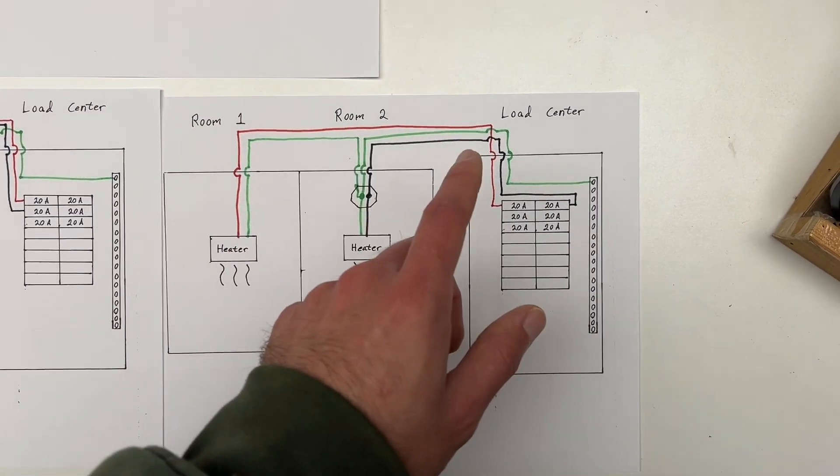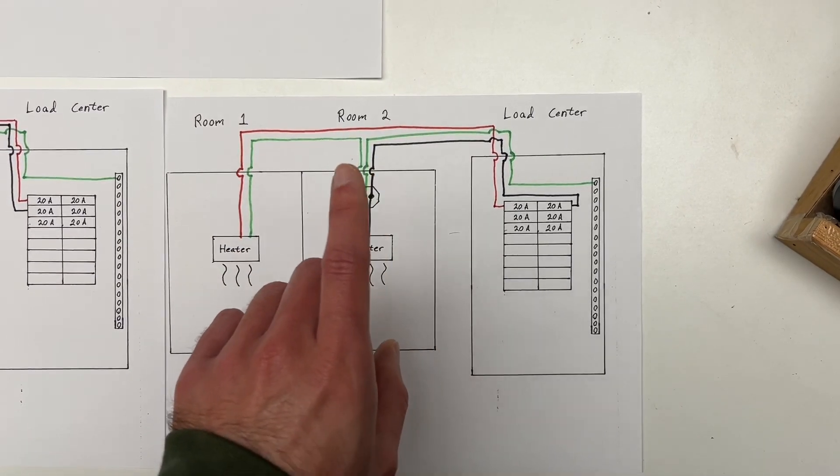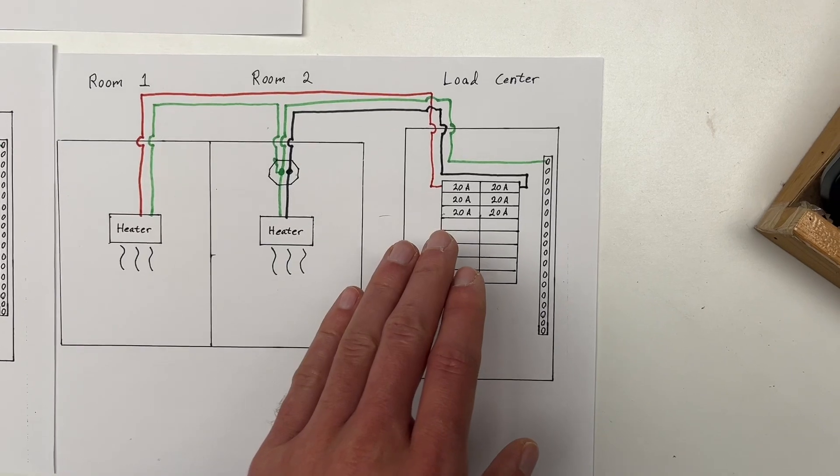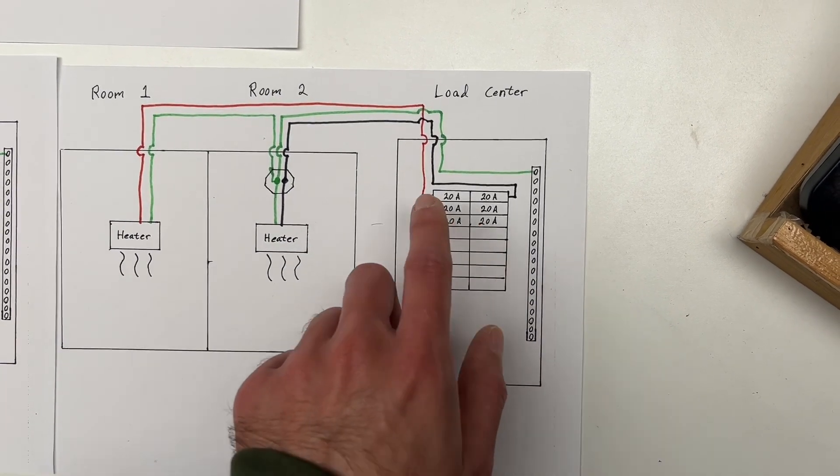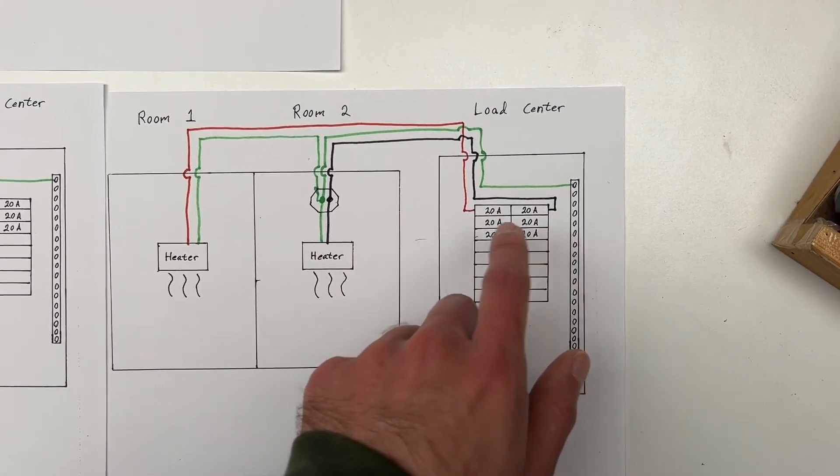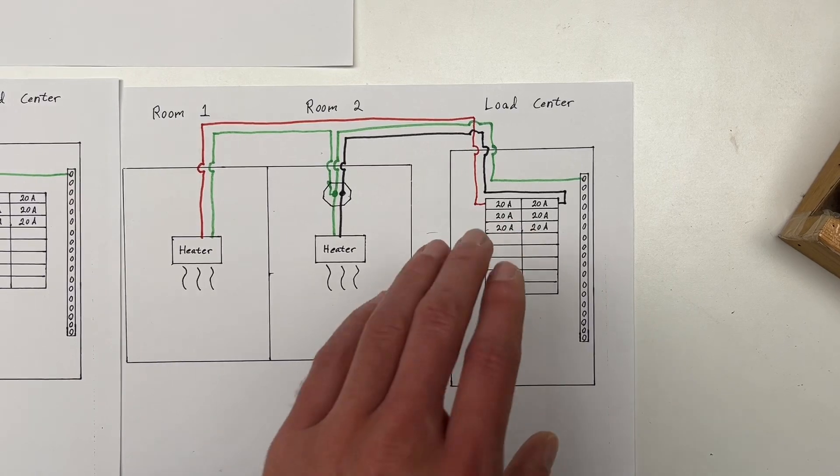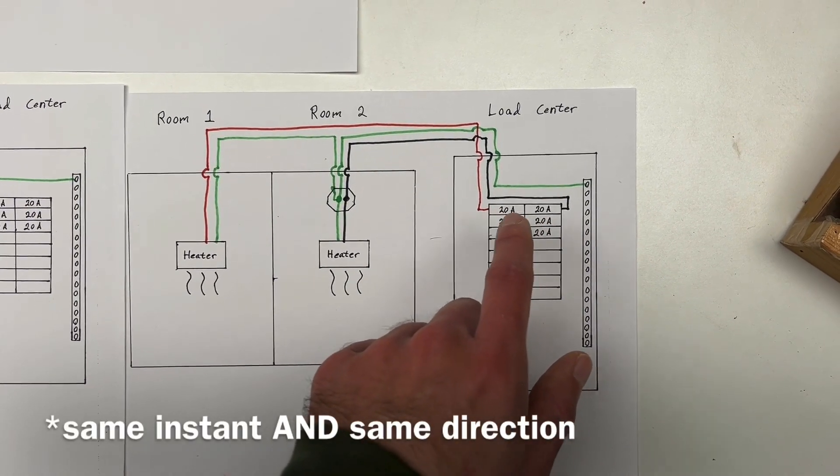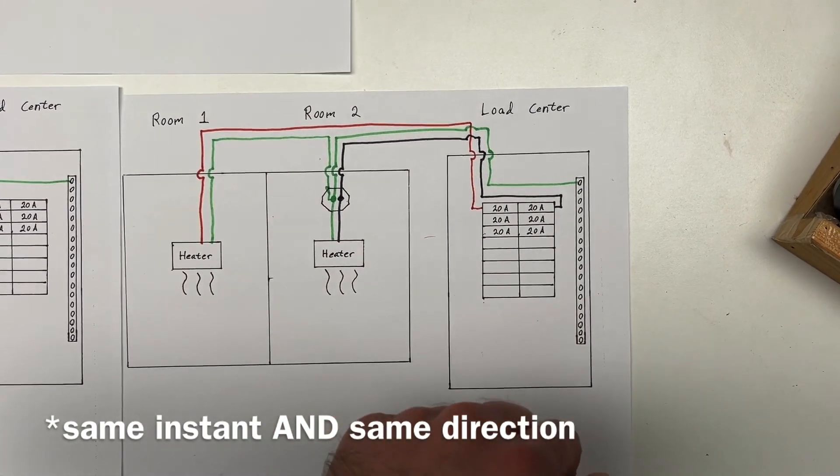So, aren't you going to undoubtedly overload the neutral wire? Well, not if you wire the breakers correctly. So, in this configuration, as shown, you actually could overload the neutral wire, because these horizontally adjacent breakers are what we call on the same phase. So, in other words, they are going to flow electricity at the same instant, and that means that 20 amps plus 20 amps would equal up to 40 amps back on the neutral wire.